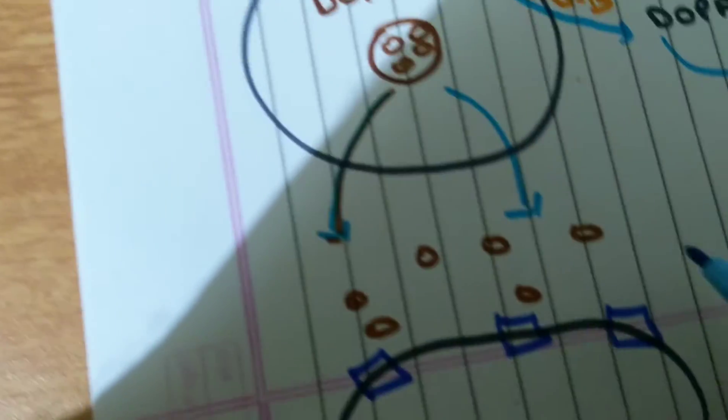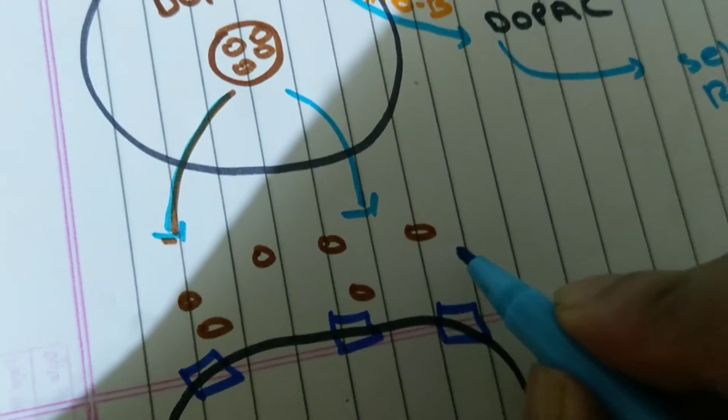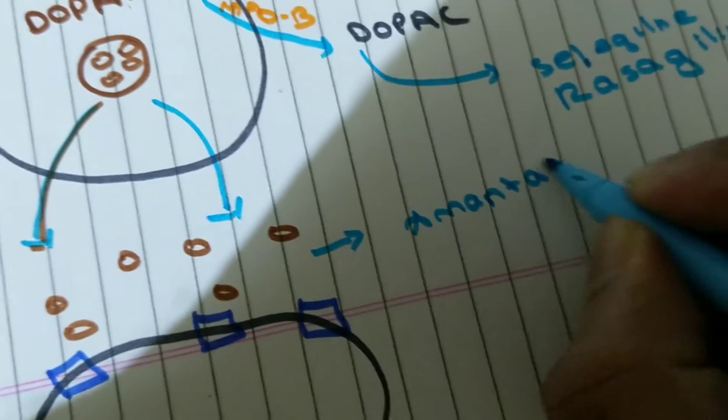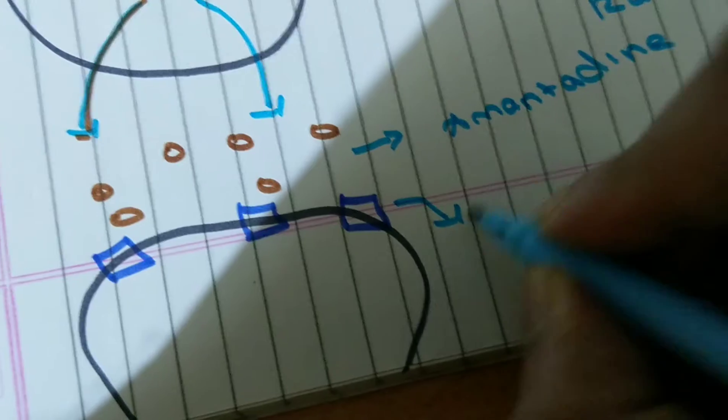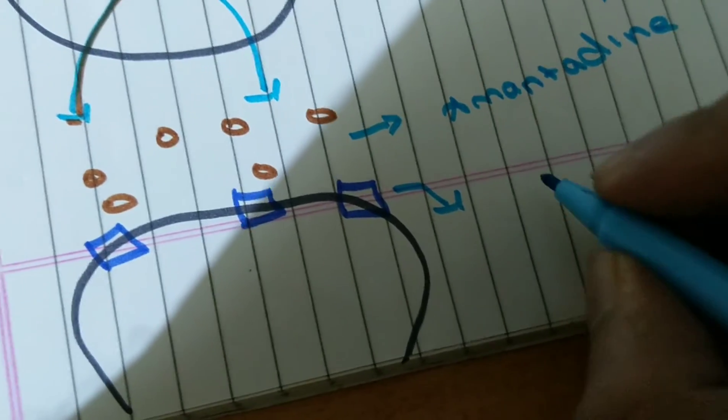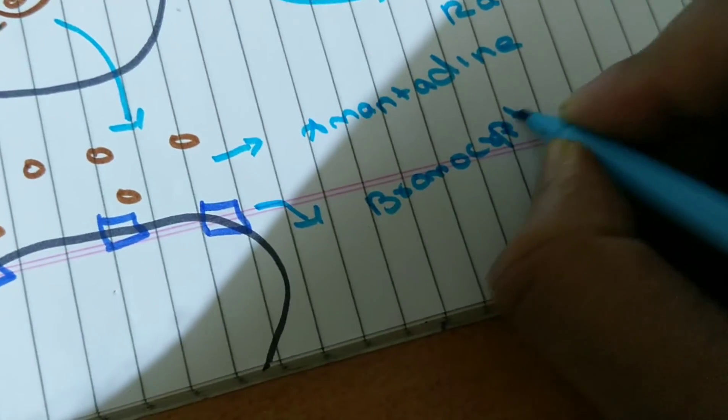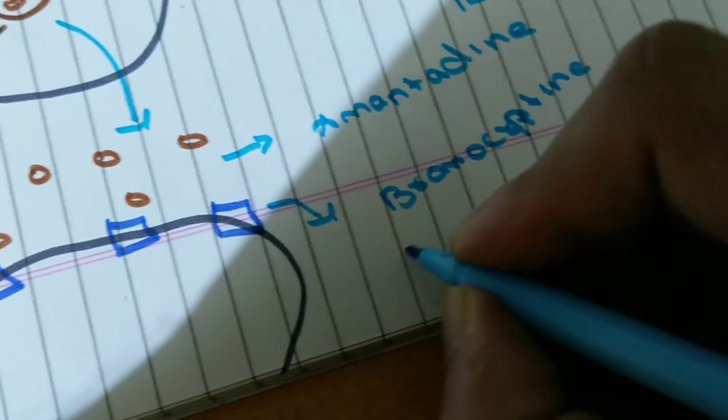We can also use dopamine decarboxylase inhibitors such as Carbidopa or Levodopa. And we can increase the dopamine availability using Amantadine. We can also enhance the activity of dopamine receptors using dopamine agonists such as Bromocriptine or Ropinirole.